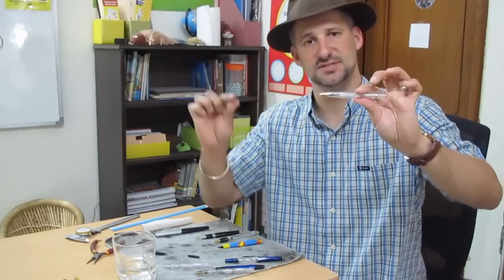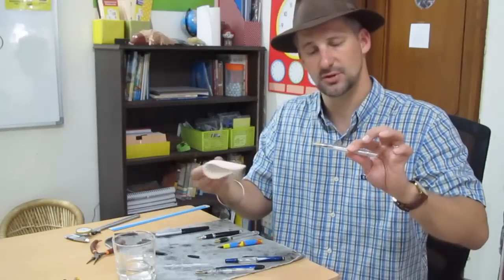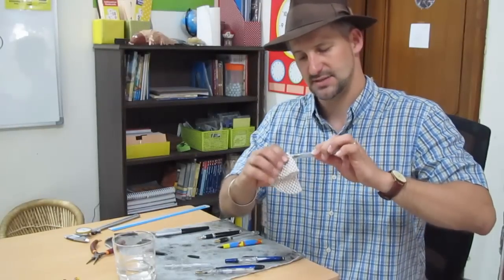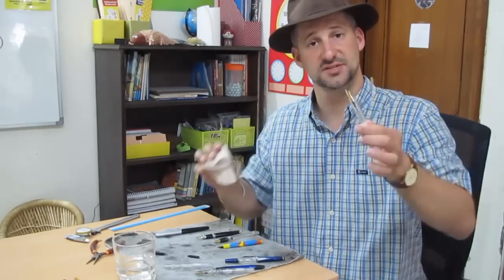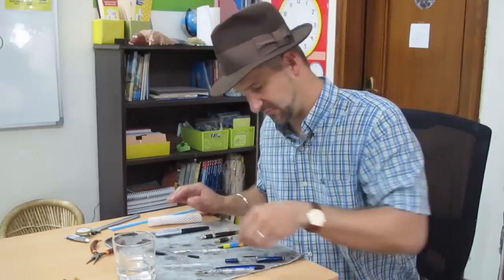Now what often happens is you can get the nib and the feed started this way but you might need a little padding to give a little bit extra force to finish inserting the nib and feed. That's on the FPR Induce.